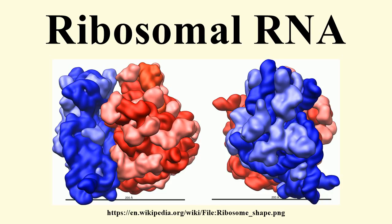mRNA is sandwiched between the small and large subunits, and the ribosome catalyzes the formation of a peptide bond between the two amino acids contained in the rRNA. A ribosome also has three binding sites called A, P, and E. The A site binds to an aminoacyl tRNA. The amino group of the aminoacyl tRNA, which contains the new amino acid, attacks the ester linkage of peptidyl-tRNA, which contains the last amino acid of the growing chain, forming a new peptide bond. This reaction is catalyzed by peptidyl transferase. The tRNA that was holding the last amino acid is moved to the E site, and what used to be the aminoacyl tRNA becomes the peptidyl-tRNA.